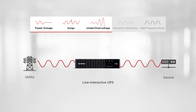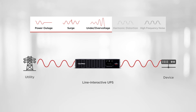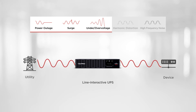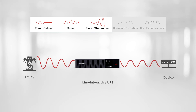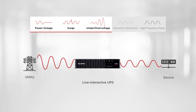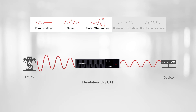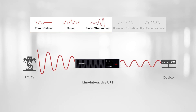Next, a line interactive UPS is further equipped with automatic voltage regulation to adjust undervoltages and overvoltages during power fluctuations, providing consistent and reliable power to connected devices.